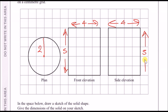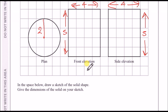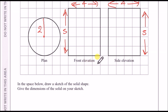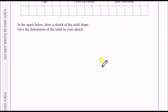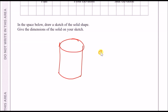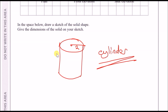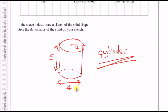From a 3D perspective, this looks like a cylinder — it has a circular base, stands upright, and the side view confirms it. Sketching the cylinder: circular top, a body, with radius 2 and vertical height of 5. The width of 4 represents the diameter across the full shape.